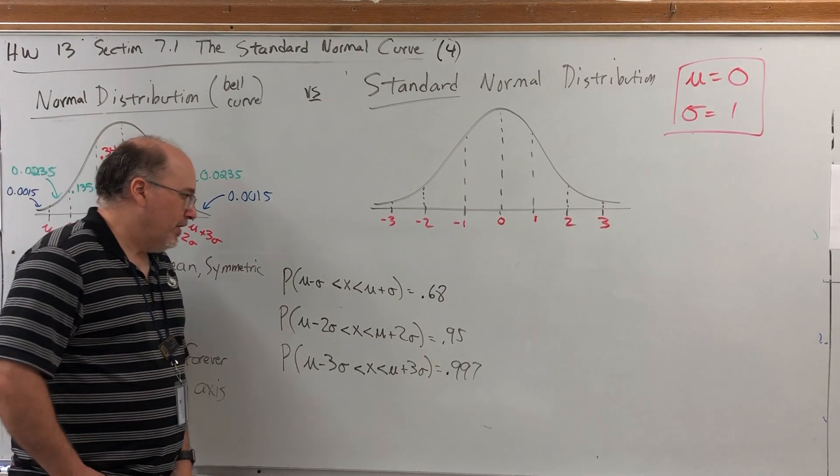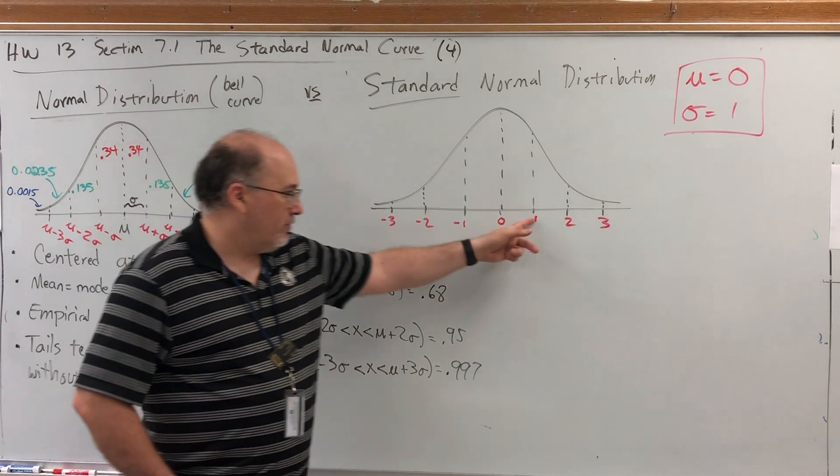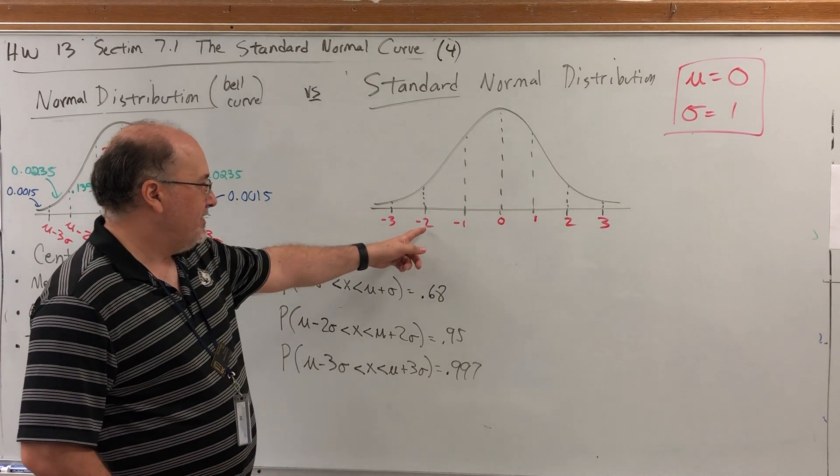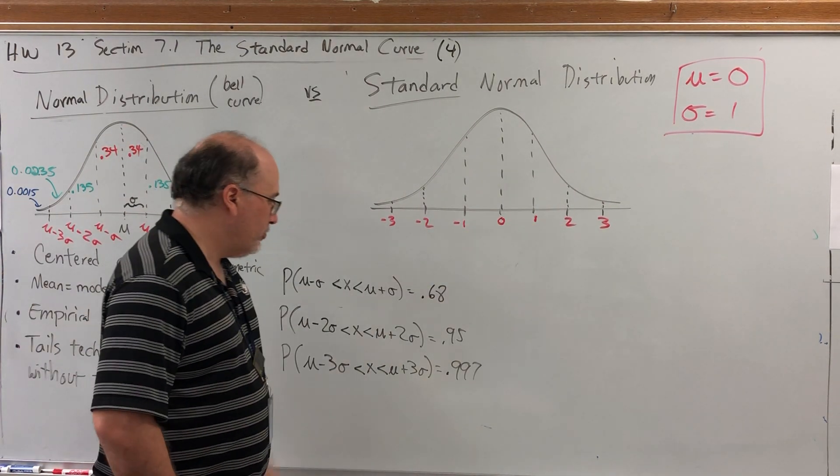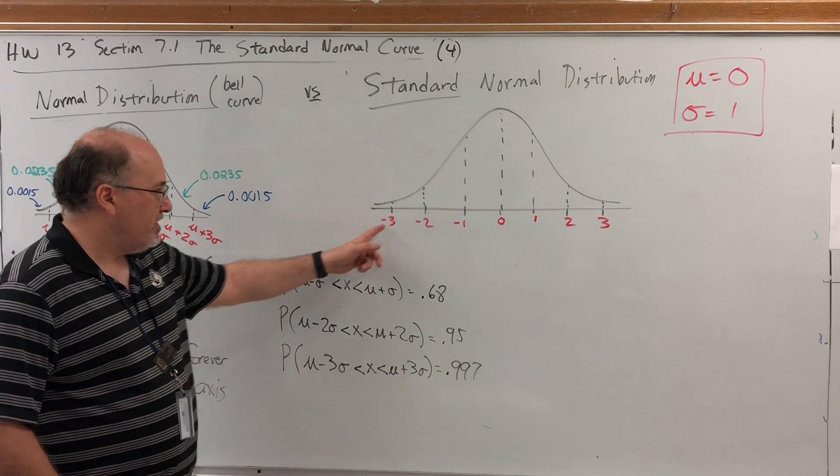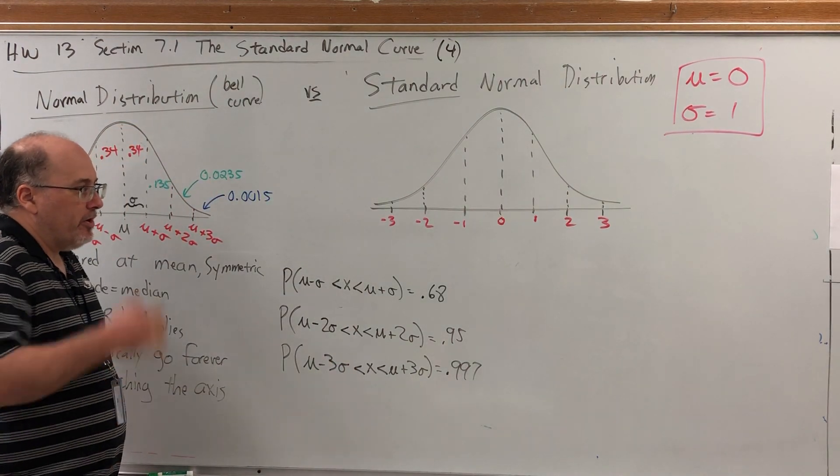If we were to set up these probabilities, we would be saying that the probability that x is between negative 1 and 1 is 0.68. The probability that x is between negative 2 and 2 is 0.95. And the probability that x is between negative 3 and 3 is 0.997. But there's something else going on here, and that's z-scores.